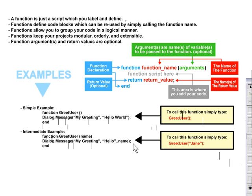So if we look on the right here, you can see to call this function, the code in red is greetUser, and we would pass a name — in this particular case, Jane. By activating greetUser(Jane) in our script, we would call this function and get a dialog message box that says 'my greeting, hello, Jane.'